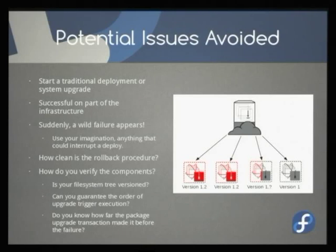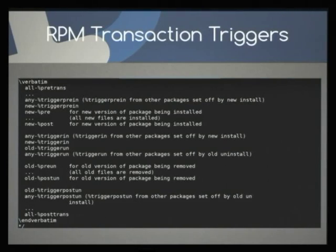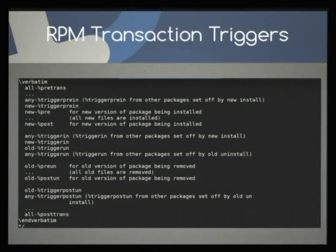By show of hands, is everybody familiar with RPM package triggers? About a third — okay. This is from the documentation that comes with RPM, from /usr/share/doc/rpm. This is literally what it says, and all package managers have this. RPM's not special — every package manager has to have an order of operations, the steps by which it goes through. And at every step of the way, some script or trigger can take effect and cause a side effect.